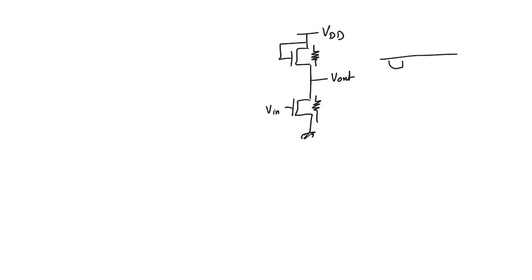If you look at an NMOS device, whenever there is a channel, that means there is an N-path between the drain and the source. This N-path has a resistance, and we found out that the value of this resistance is never going to be zero. Thus, there is going to be power dissipation in this resistance — resistance and current means power dissipation.